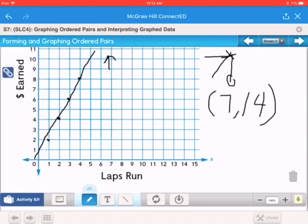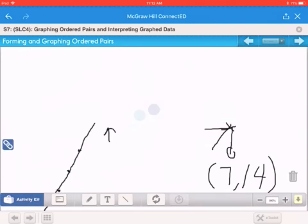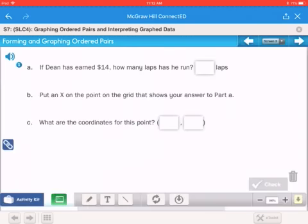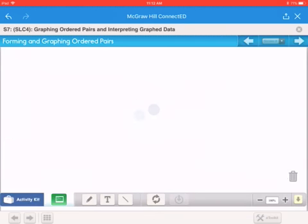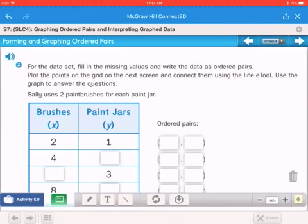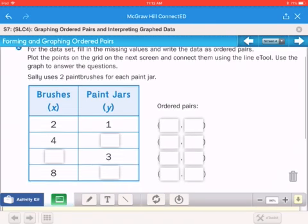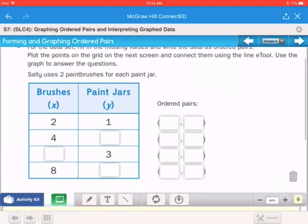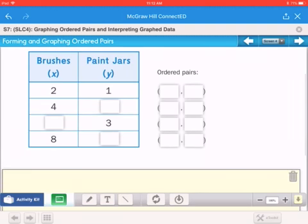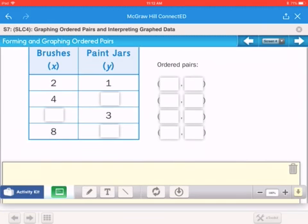Now we'll go on to number two. So part two, it says Sally uses two paintbrushes for each jar. So we'll have to fill in the ordered pairs for that one. This is number two on 139. Two brushes is one jar.